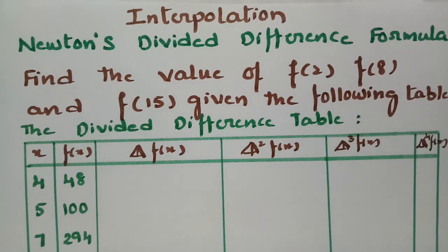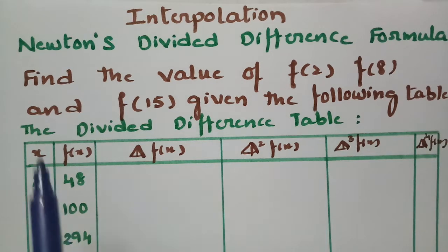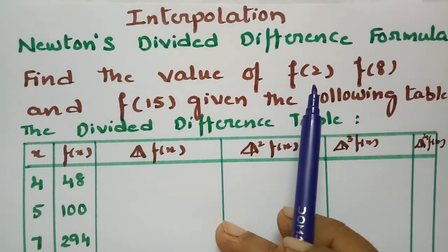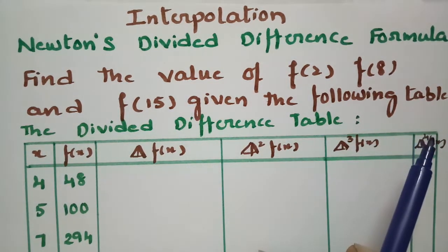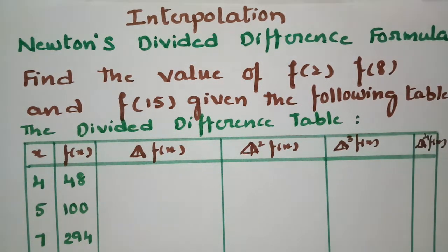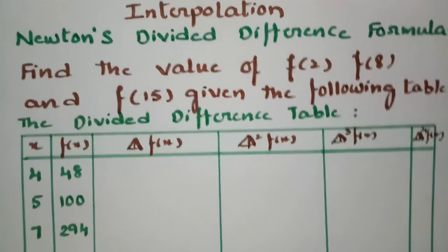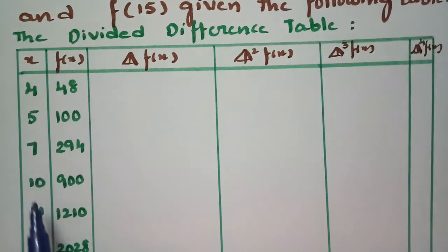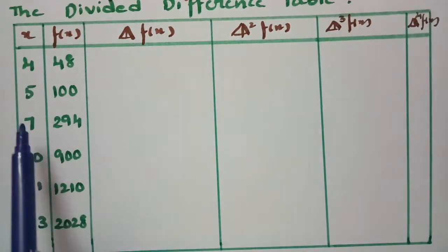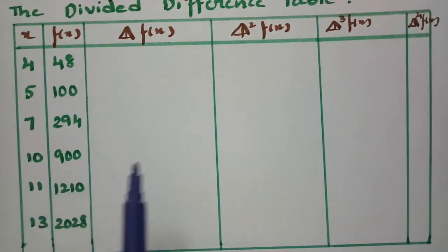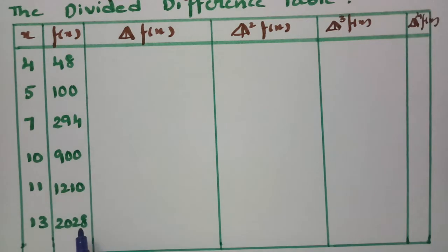In today's topic, I am going to discuss Newton's divided difference formula. Using Newton's divided difference formula, we have to find the values of f(2), f(8), and f(15) given the following table. Here is the table with all the x values and corresponding f(x) values plotted.